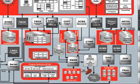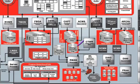However, archive log files, flashback logs, image copies, and backup sets are stored only in the fast recovery area. Similarly, the change tracking file can only be stored in the database area.